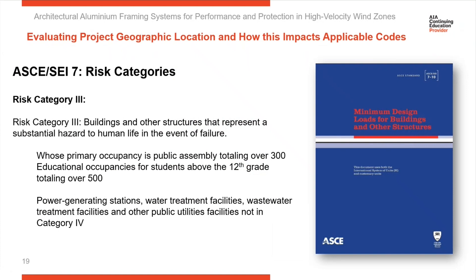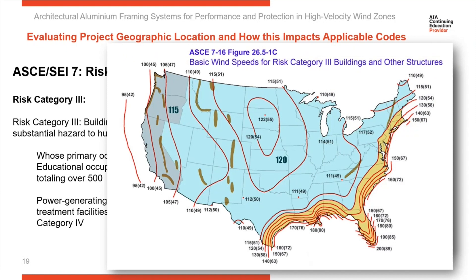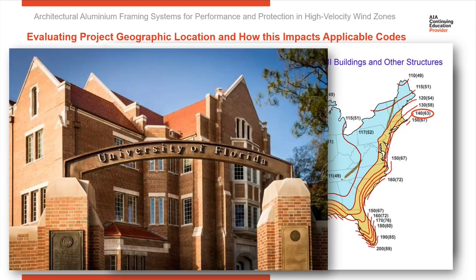Risk Category 3 covers buildings and structures that, if lost, would represent a substantial hardship to the local community — the type of project that provides a service to the community, and if lost, would have a negative impact. Think of facilities like a medical facility, a doctor's office, a school, or a university. Here's the wind map, and you can see much more of the east coast and the panhandle are now falling under the 140 mile-per-hour wind zone. As we increase in the importance factor, we're moving the 140 mile-per-hour wind zone deeper inland, taking in more land and more geography.